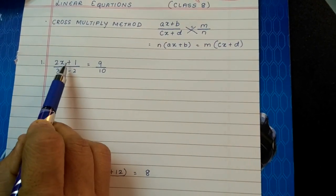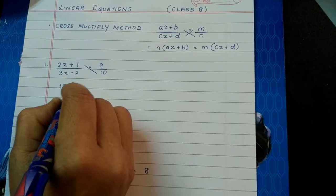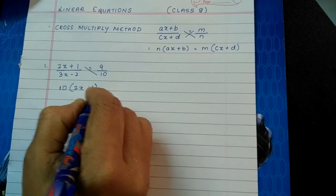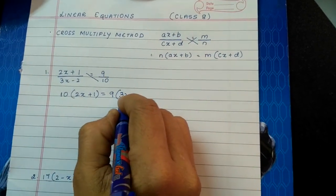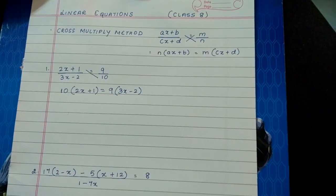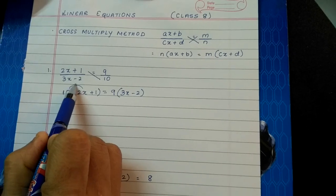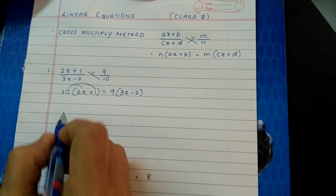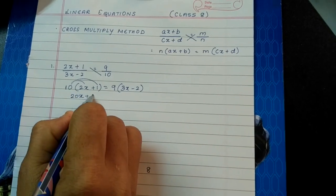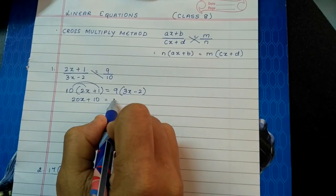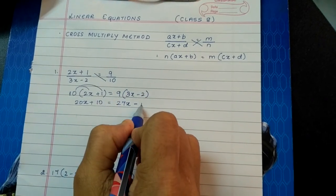Now if you see here, 2x plus 1 has to be multiplied with 10. So 10 times the whole 2x plus 1 is equal to 9 multiplied into the whole 3x minus 2. So 10 has to be multiplied by 2x and then 10 has to be multiplied with 1. So 10 times 2 is 20x plus 10 times 1 is 10, equals 9 times 3 is 27x minus 9 times 2 is 18.